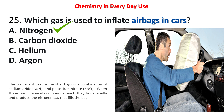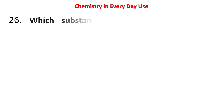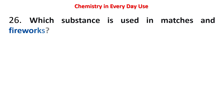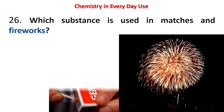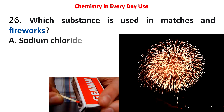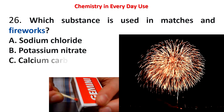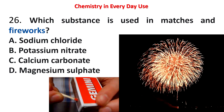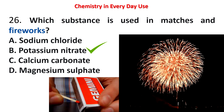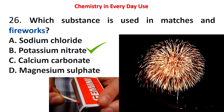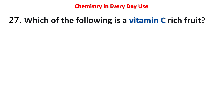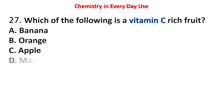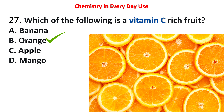Next question: which substance is used in matches and fireworks? Options: sodium chloride, potassium nitrate, calcium carbonate, magnesium sulfate. The answer is potassium nitrate. Next question: which of the following is a vitamin C rich fruit? Options: banana, orange, apple, mango. The answer is orange — orange is a vitamin C rich fruit.